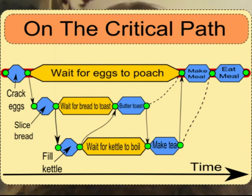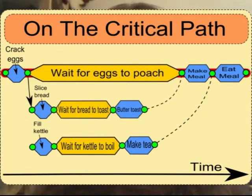What if you are concerned about being late for work? Reducing the toasting time would be pointless, since toasting is not on the critical path. What about calling for your significant other? Two pairs of hands allow some tasks to be parallelised — in project management jargon, creating greater parallelism is known as fast-tracking. Slicing the bread and boiling the kettle simultaneously makes the result look like this. However, this intervention makes no difference to the overall project duration, so you should probably let your other half rest in bed.